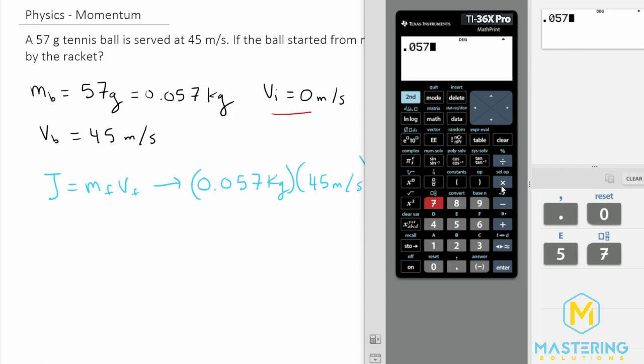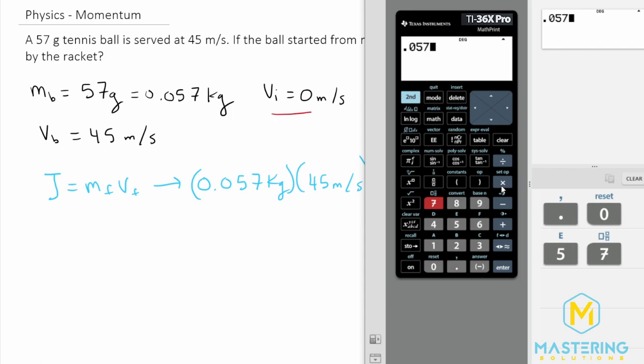So we have 0.057 kilograms times 45 meters per second, which gives us 2.6 kilograms times meters per second. You can also notate impulse by the SI units of Newton seconds - either one is correct. The answer is 2.6.